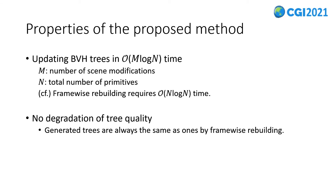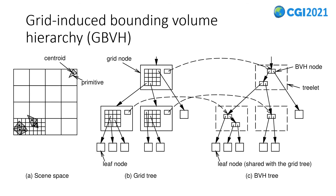So, I propose a new method for constructing BVH trees for dynamic scenes. The new method updates BVH trees in O(m log n) time, which is similar to the refitting approach. Here, m is the number of scene modifications — that is, primitive insertions or deletions — and n is the total number of primitives. Since frame-wise rebuilding requires O(n log n) time, the new method is much more advantageous. The remarkable point is that there is no degradation of tree quality, meaning generated trees are always the same as those produced by frame-wise rebuilding. The new method is named Grid-Induced Bounding Volume Hierarchy, or GBVH for short.